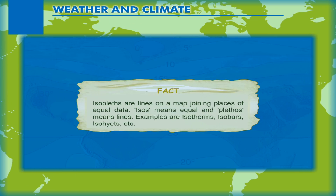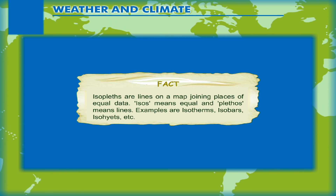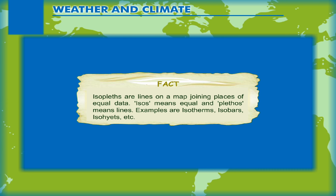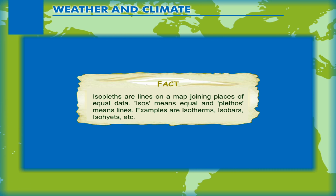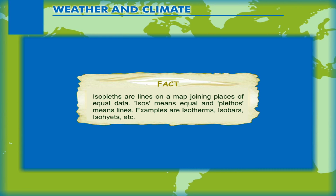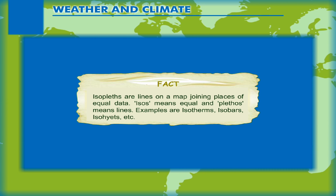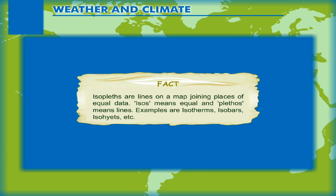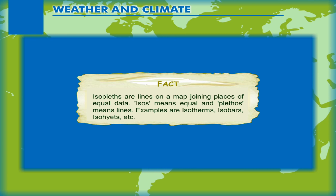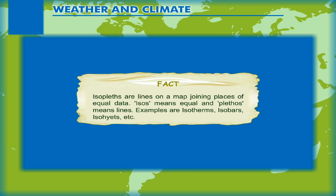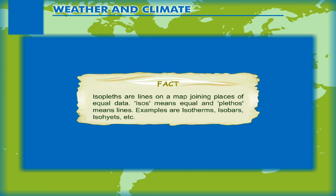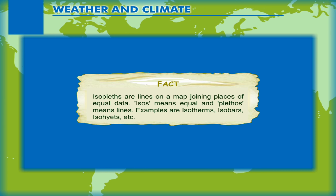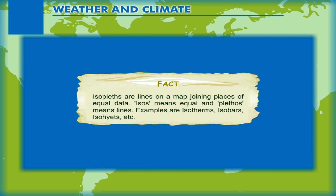Fact: Isopleths are lines on a map joining places of equal data. 'Isos' meaning equal and 'plethos' meaning lines. Examples are isotherms, isobars, isohyets, etc.